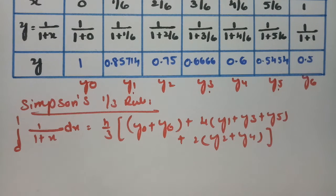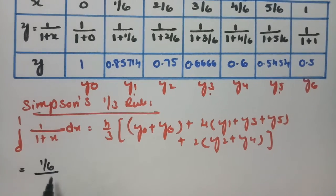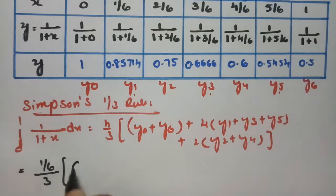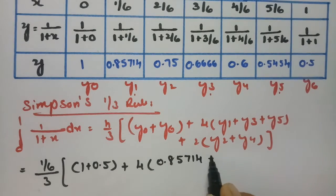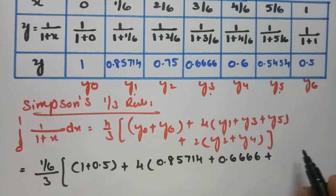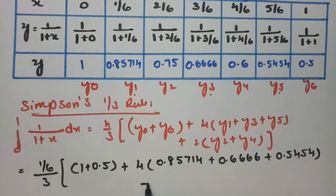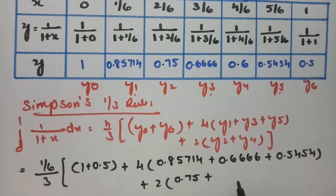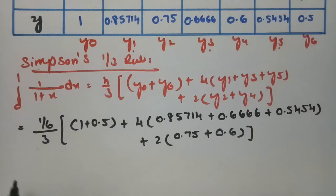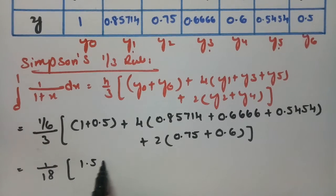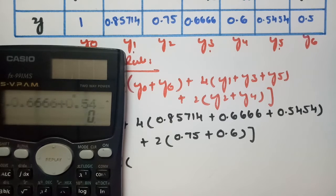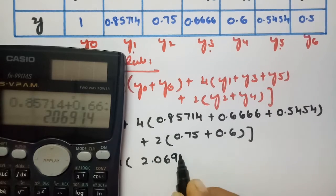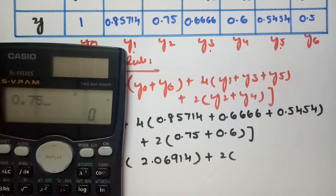Substituting all values: h = 1/6, so h/3 = 1/18. We have (y0 + y6) = 1 + 0.5 = 1.5. Then 4 times the odd ordinates: 4 × (0.85714 + 0.6666 + 0.5454) = 4 × 2.06914. Then 2 times the even ordinates: 2 × (y2 + y4) = 2 × (0.75 + 0.6) = 2 × 1.35.